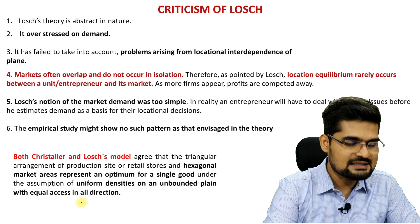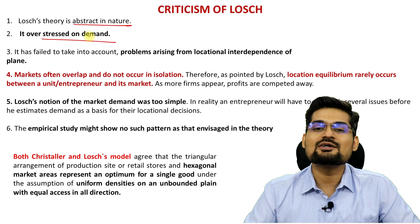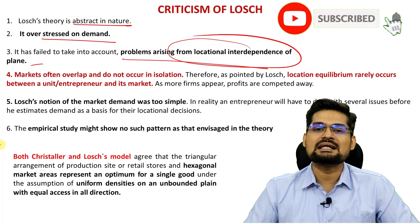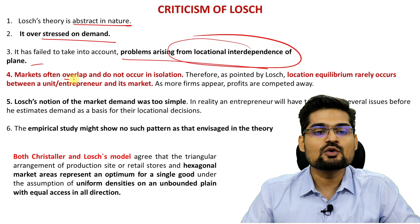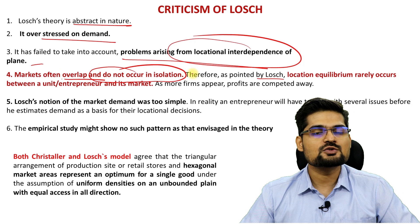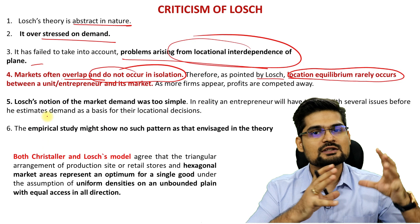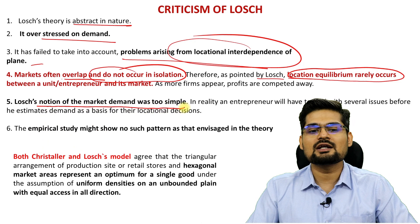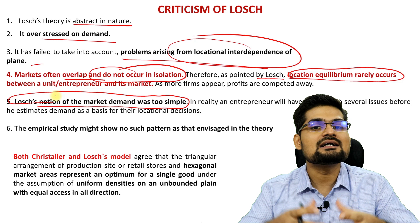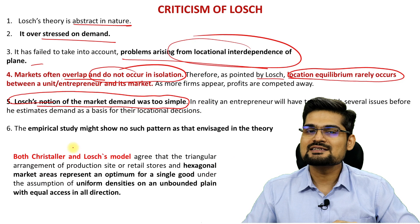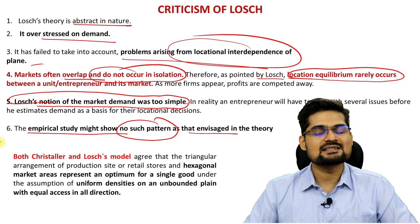Lösch's theory is very abstract in nature, overstressing demand and economics of location. The problems arising from locational interdependence on the plane create a chaotic system. Markets often overlap and do not occur in isolation, and as Lösch himself pointed out, locational equilibrium rarely occurs between an entrepreneur and a market. His notion of market demand was simplistic, giving a simplified understanding of an actually complex market system. An empirical study might show no such pattern as envisaged in the theory.